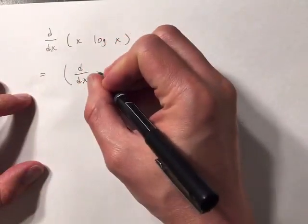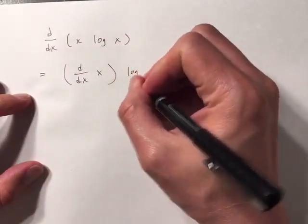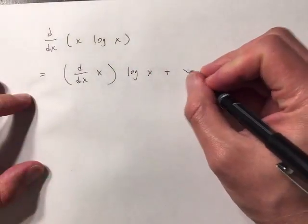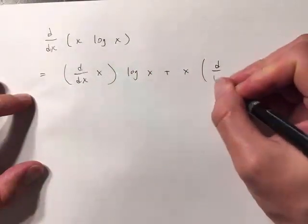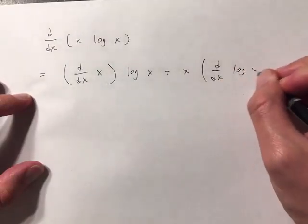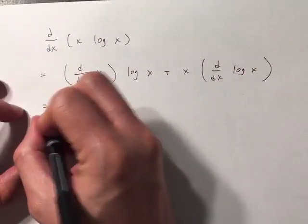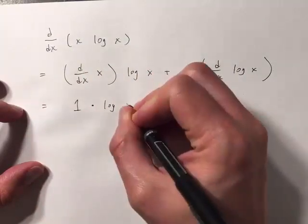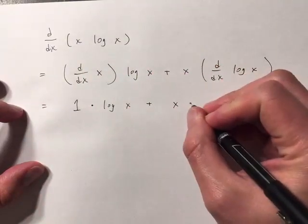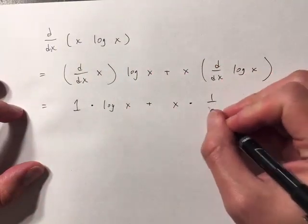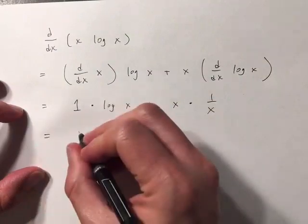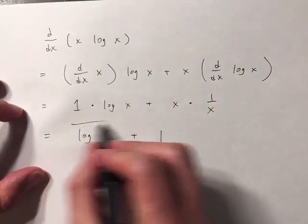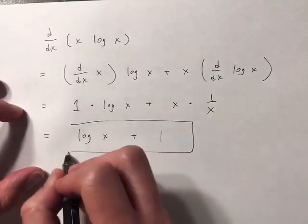So you differentiate x first, times log x, plus x, times the derivative of log x. So this is just 1 times log x plus x times 1 over x, which is just equal to log x plus 1. And that's it.